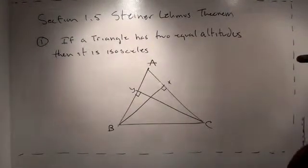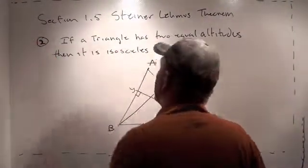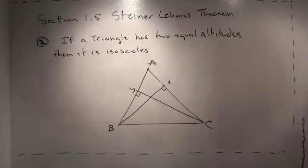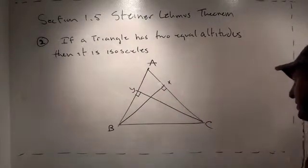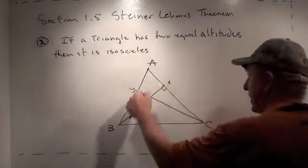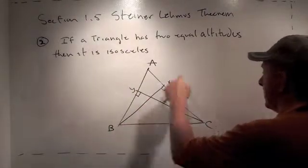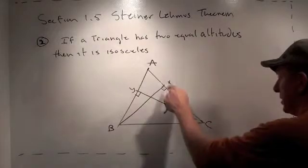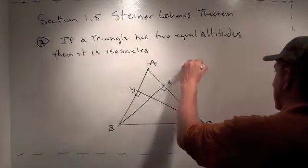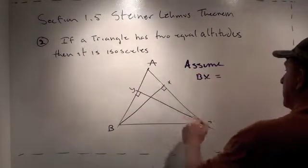Here we're back for the next little mini-theorem — number two. If a triangle has two equal altitudes, then it is isosceles. Here's my triangle ABC. I've drawn the altitude from C to Y, which hits side AB at a 90-degree angle. And I've drawn another altitude BX, that hits AC also at a right angle. Our assumption is simply that BX equals CY.